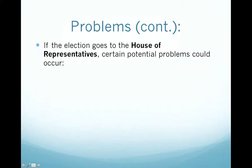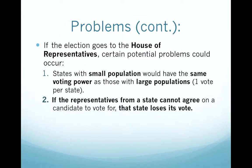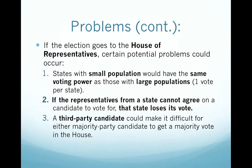If the election goes to the House of Representatives, certain potential problems can occur. One, states with small populations would have the same voting power as those with large populations — one vote per state. Two, if representatives from a state cannot agree on a candidate to vote for, that state loses its vote. And three, a third-party candidate could make it difficult for either majority party candidate to get a majority vote in the House.